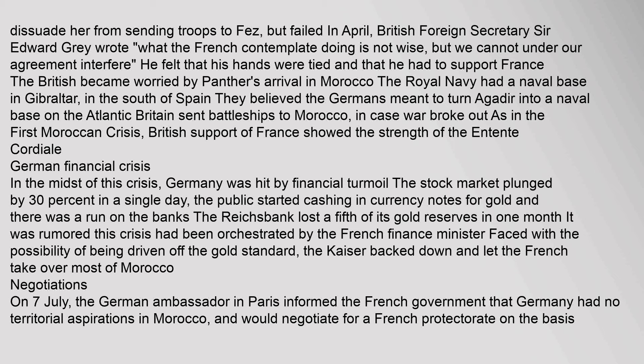The speech was interpreted by Germany as a warning that she could not impose an unreasonable settlement on France. By 4 November, Franco-German negotiations on the Treaty of Fez had led to a convention under which Germany accepted France's position in Morocco in return for territory in the French Equatorial African colony of Middle Congo, now the Republic of the Congo.